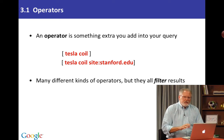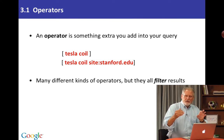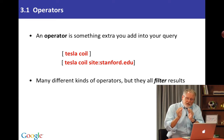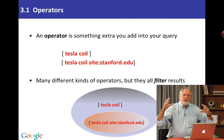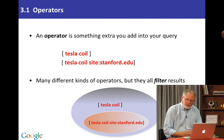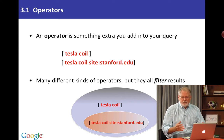There are many different kinds of operators, but they all filter the results. You have a base query like [tesla coil], and then you add an operator to filter or restrict or reduce the number of results. Here we've got a space of results when you do a query like [tesla coil] — say there's 10 million results. Now suppose you want only the results about tesla coils from a particular site like stanford.edu. You would do the search query [tesla coil] modified by the operator site:stanford.edu, and you'll get a much smaller set of results. The set of results when you apply an operator is always smaller than the unmodified query.